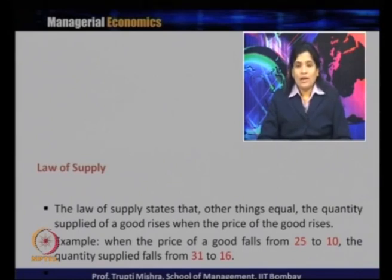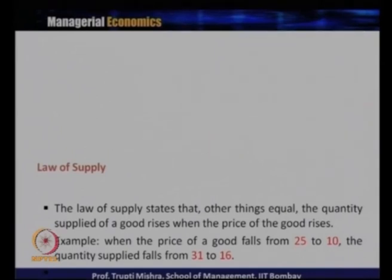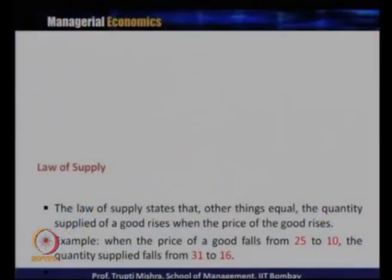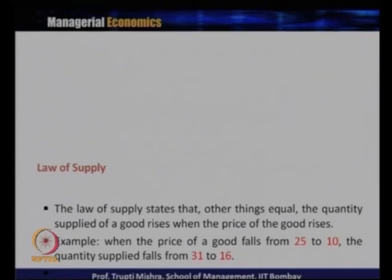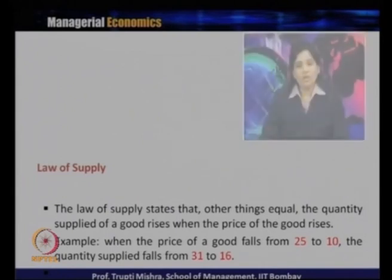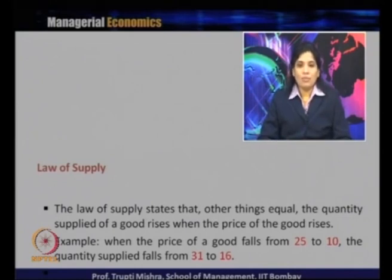For example, when the price of a good decreases from 25 rupees to 10 rupees, the quantity supplied decreases from 31 units to 16 units. When price was 25, quantity supplied is 31; when price is 10, quantity supplied is 16. This aligns with the basic principle of the law of supply: when price is more, quantity supplied is more, and when price is less, quantity supplied is less.